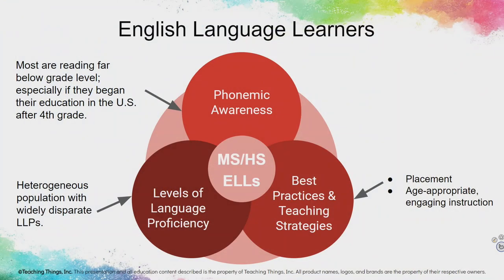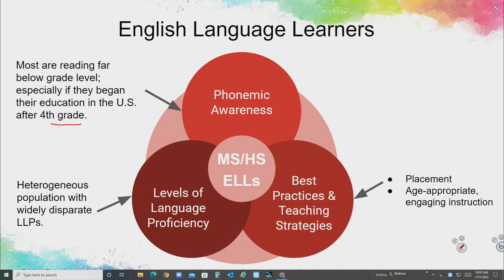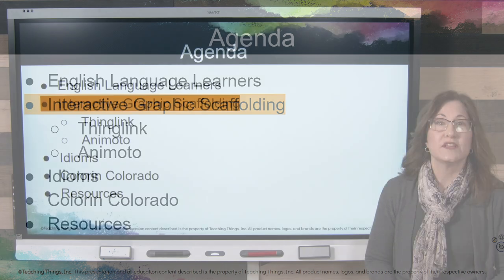English language learners may not have strong phonemic awareness. If they enter the U.S. after fourth grade, they may not even be proficient in their own home language, so they'll need reinforcement integrated into your regular studies. It is a heterogeneous population with widely disparate levels of language proficiency. We want to think of best practices and teaching strategies, and it would be detrimental to place ELs in a lower class. You want to make sure that you create age-appropriate, engaging instruction. And that brings us to our interactive graphic scaffolding.